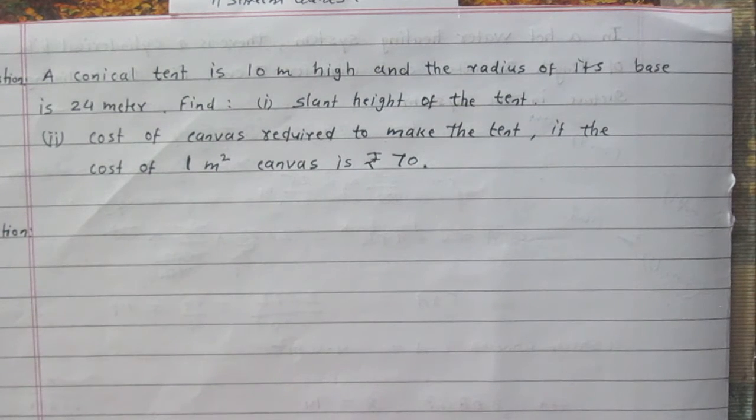A conical tent is 10 meter high and the radius of its base is 24 meter. Find number 1, slant height of the tent, and number 2, cost of canvas required to make the tent if the cost of 1 meter square canvas is Rs 70.